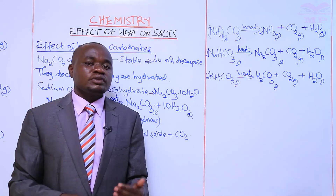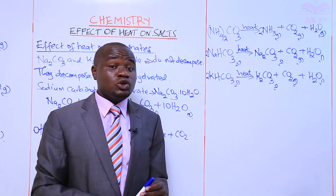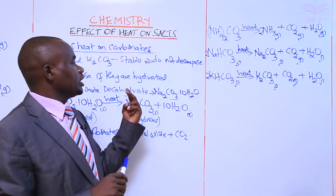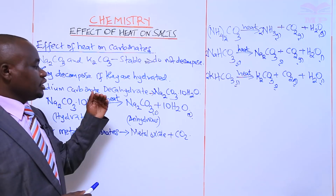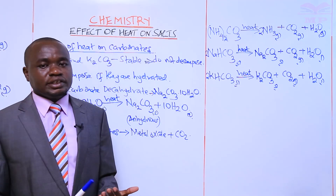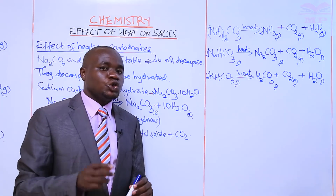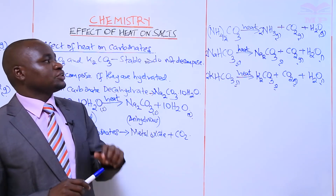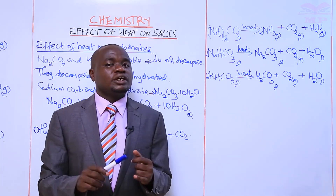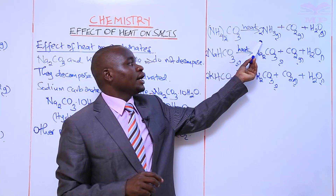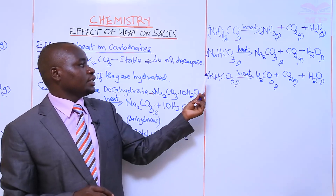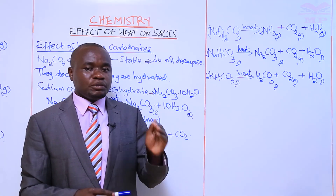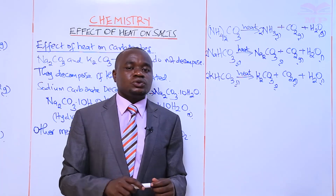To summarize: sodium carbonate and potassium carbonate do not decompose because the two elements are very reactive and form stable carbonates. They only decompose if hydrated. The other metal carbonates decompose on heating to give a metal oxide and carbon dioxide gas. Ammonium carbonate decomposes to give three products: ammonia gas, carbon dioxide, and water. Hydrogen carbonates of sodium and potassium decompose to give the corresponding metal carbonate, carbon dioxide, and water.